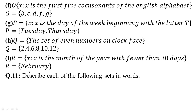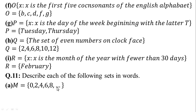In question number 11, describe each of the following sets in words. Given set notation, we write the answer in words. Given M = {0, 2, 4, 6, 8, ...} — the ellipsis means it continues. So 0, 2, 4, 6, 8, 10, 12, and so on. We write that M is the set of even numbers.